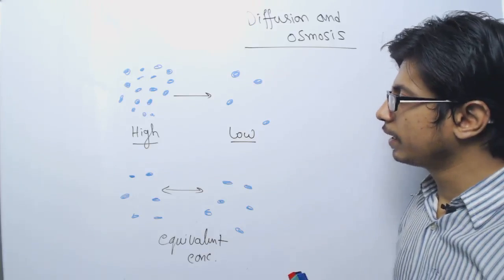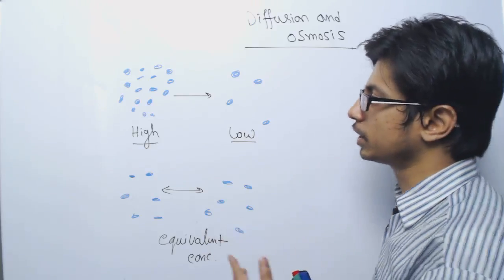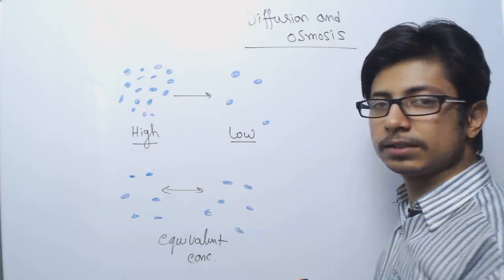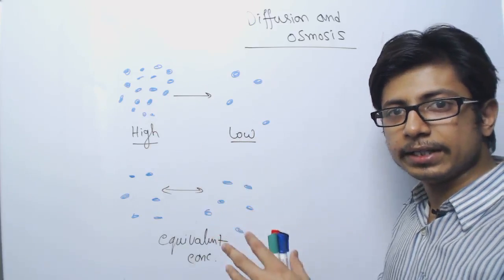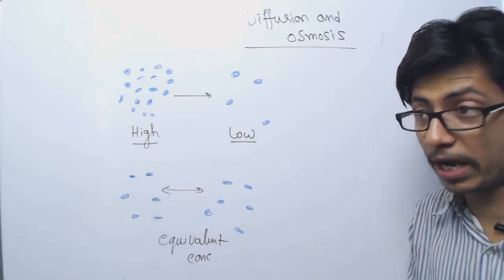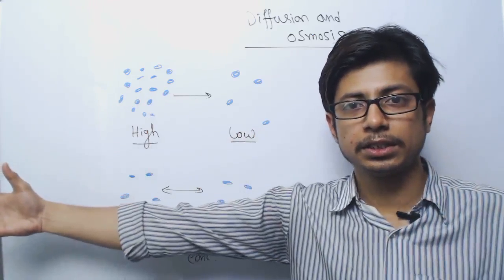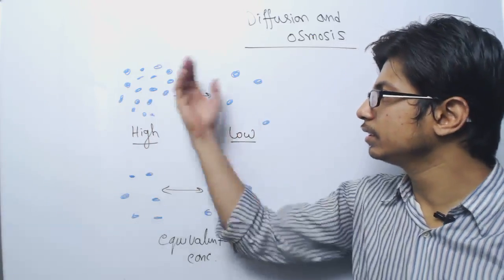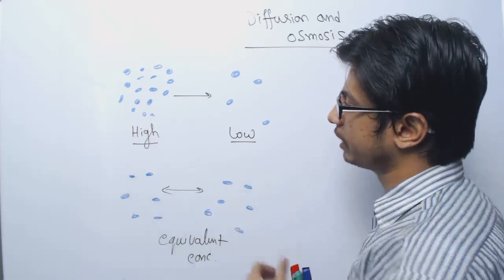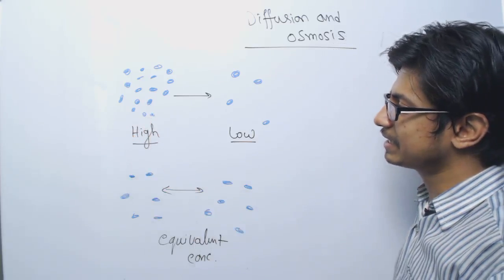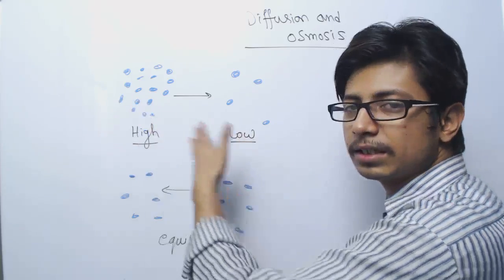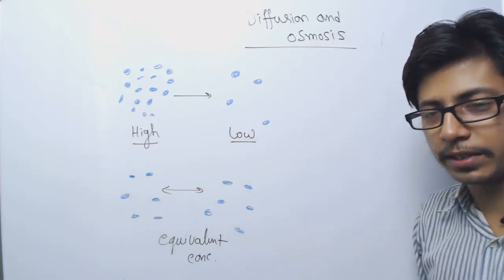The second thing that influences diffusion is pressure. If you increase the pressure inside the diffusion system, the movement of those particles will grow slow, and if you release the pressure they will start moving. Another thing that also regulates the whole process is the difference in concentration.